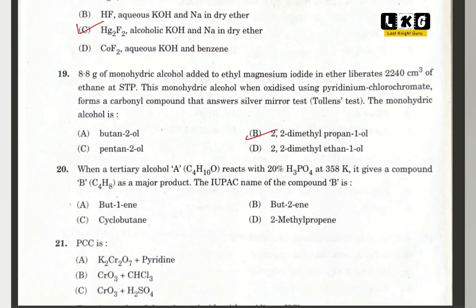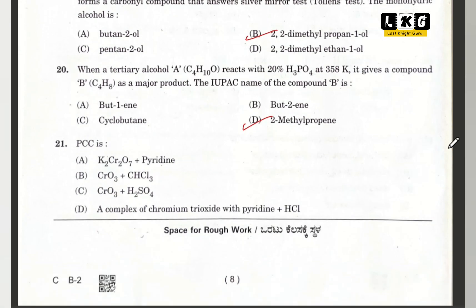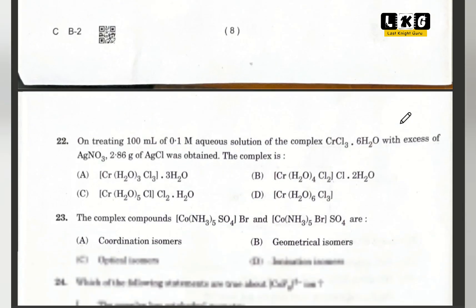Question number 20: when a tertiary alcohol reacts with 20% H3PO4 at 358 Kelvin, it gives a compound as major product. The IUPAC name of compound B is option D — 2-methylpropene is formed. Question number 21: PCC is option D — a complex of chromium trioxide with pyridine plus HCl.